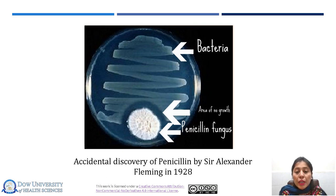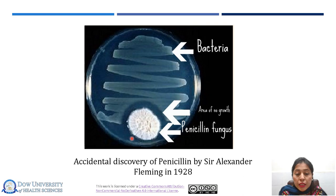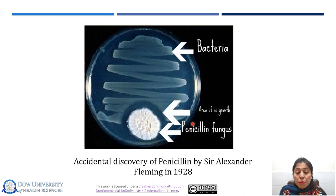Now we will talk about how penicillin was discovered. Basically, it was an accidental discovery by Sir Alexander Fleming in 1928. He left his Staphylococcus plates on incubation and noticed the growth of a mold that inhibited the growth of bacteria. As you can see in this picture, this is the growth of the mold and it is inhibiting the growth of bacteria on the same plate. It was thought that the mold was producing some biologically active substances that were inhibiting the growth of bacteria.